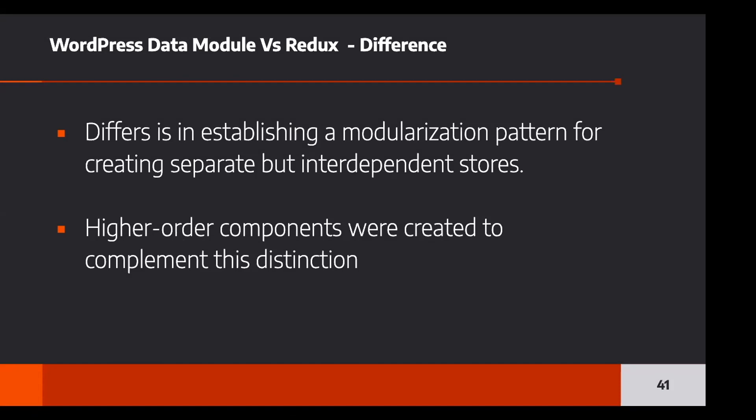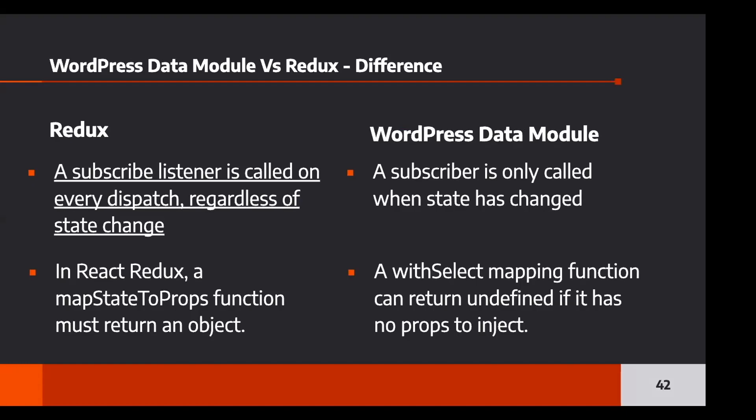The differences are: the WordPress data module establishes a modularization pattern for creating separate but independent stores, and higher-order components were created to complement this distinction. Comparing side by side — in Redux, a subscribe listener is called on every dispatch regardless of state change, whereas in the WordPress module the subscriber is called only when state actually changes. In React Redux, a mapStateToProps function must return an object, but in the WordPress data module a withSelect mapping function can return undefined if it has no props to inject.